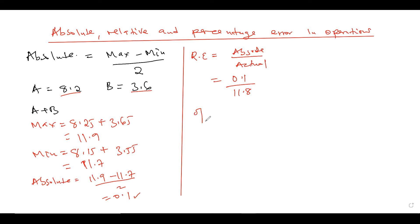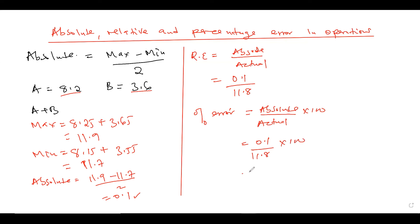For the same question, if they asked for percentage error, percentage error of this operation will be given by absolute error over actual value, then times 100. If you do this operation, you get an answer of 0.84%. So from this operation, if they ask for the absolute error the answer is 0.1. If they ask for relative error, it's absolute over actual. If they ask for percentage error, it's absolute over actual times 100, because anything percentage you multiply by 100.